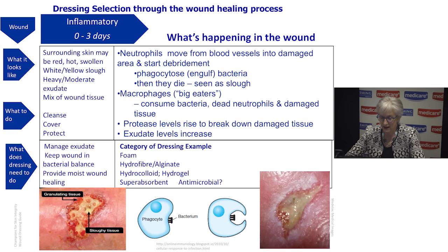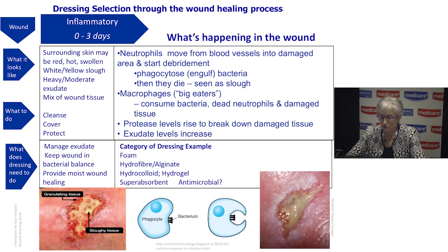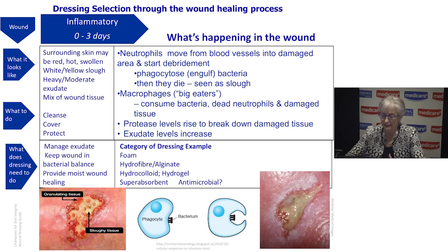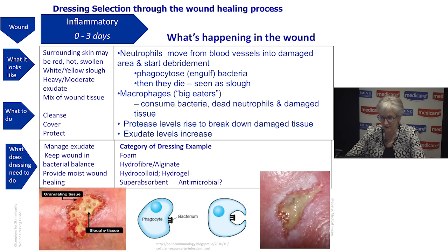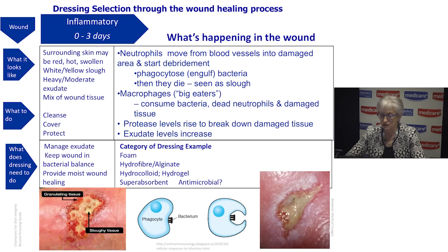As the neutrophils die, they send out a message to the next cell, which is a macrophage. Macrophages are the big eaters — called in by the dying neutrophils — and they consume the dead neutrophils. They also remove bacteria and any damaged tissue from the wound. At this point, protease levels will rise, helping to break down damaged tissue so the macrophages can engulf and remove it.